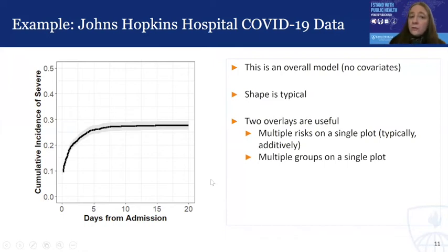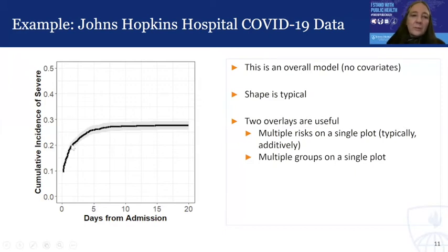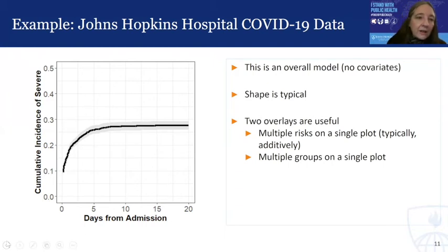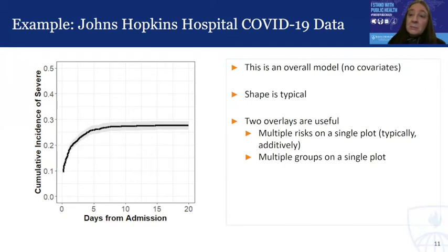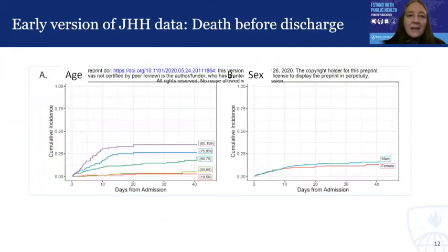Two useful overlays on a basic single curve are common. The first is to plot multiple risks on a single plot, often additively — for example, adding death before severe disease as a second curve above the first, where the space between characterizes cumulative incidence of death and the overall height represents death or severe disease. The second type of overlay is to plot multiple groups on a single plot to compare cumulative incidence of a specific event between groups.